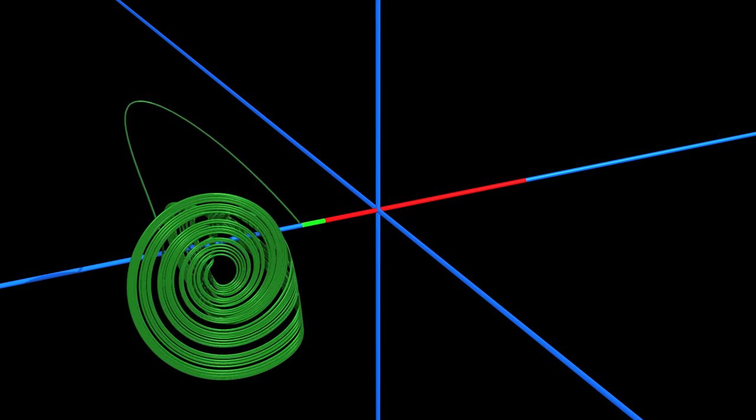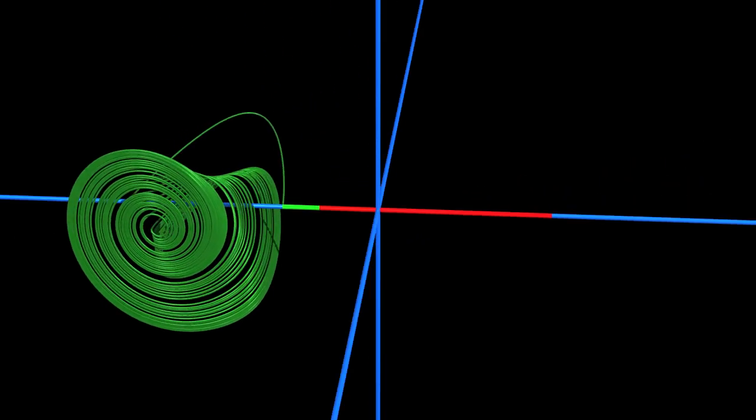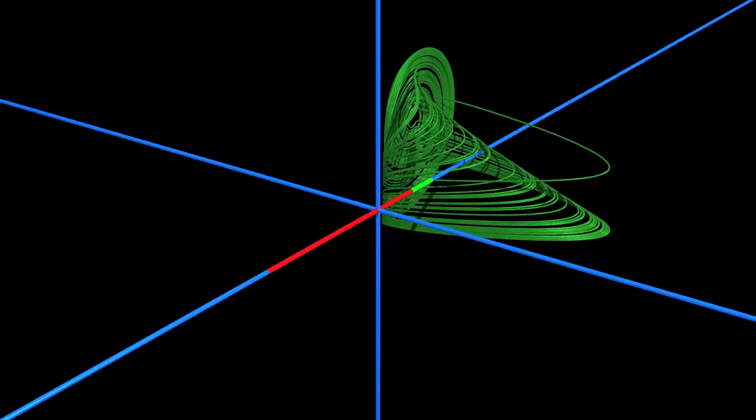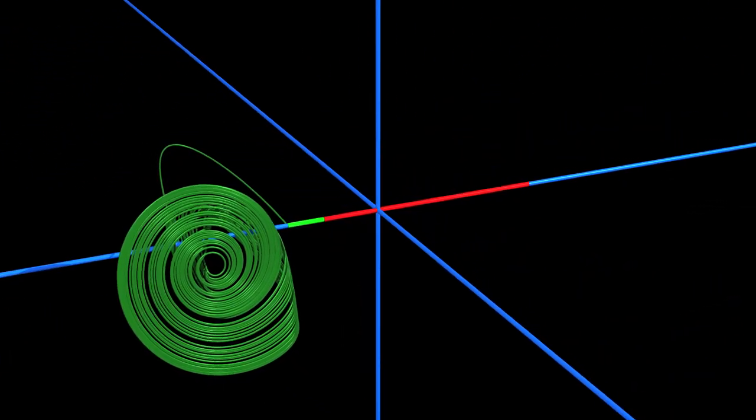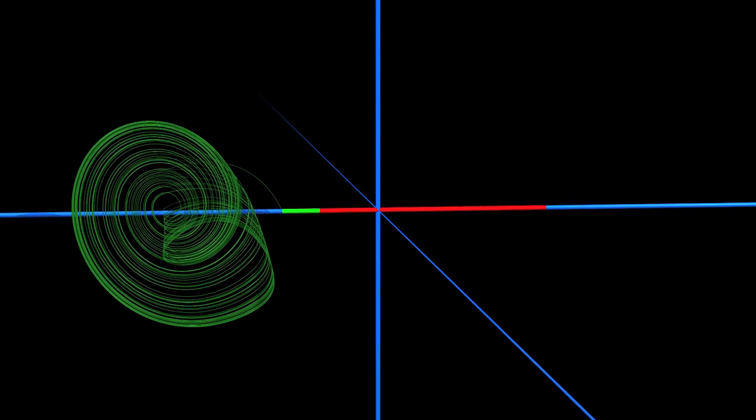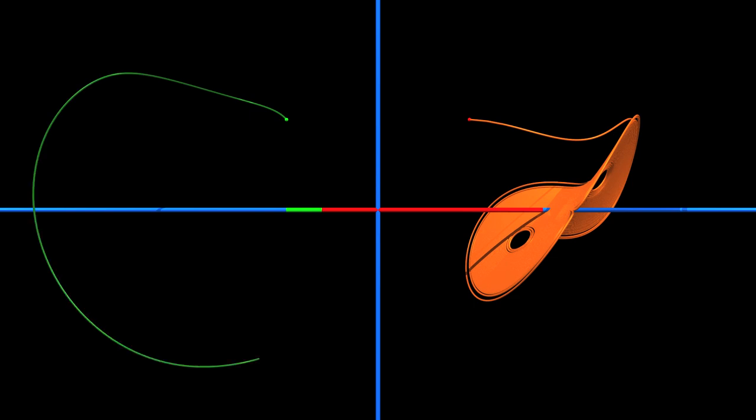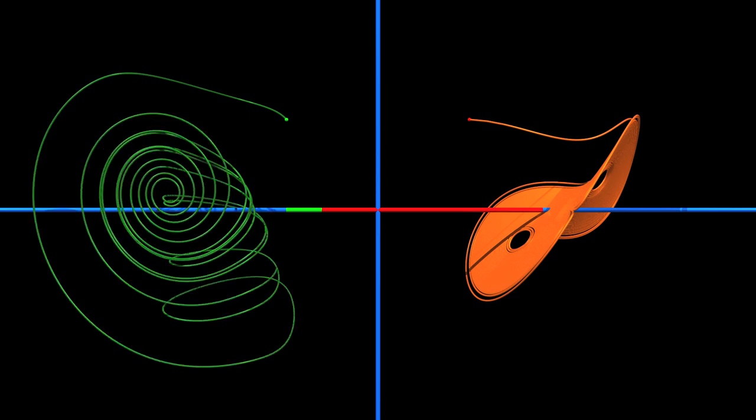Space appears to be split into two regions. If one starts with a point in the first region, the trajectory accumulates on the orange attractor. If we start in the second region, we end up at the green attractor. In other words, there is no SRB measure since the long-term behavior depends on the initial condition. In fact, there are two SRB measures. For certain initial conditions, statistics follow the first measure. For other initial conditions, the second.